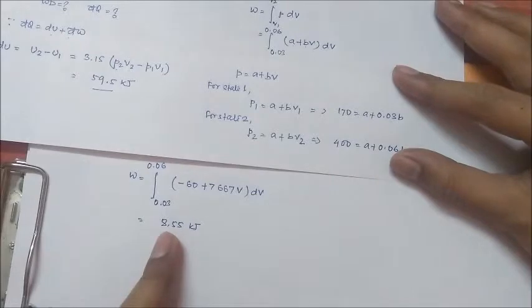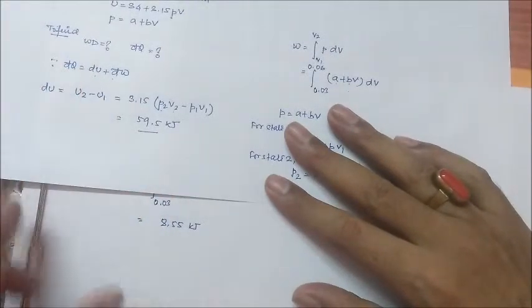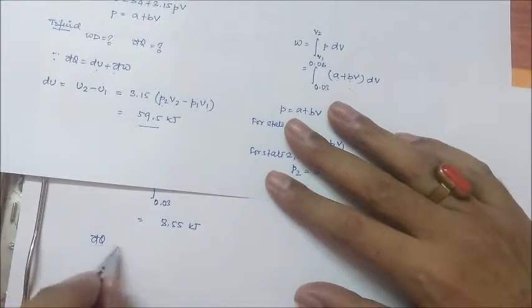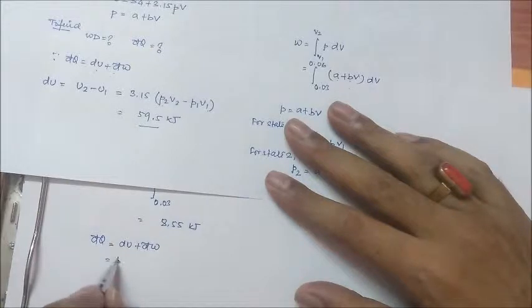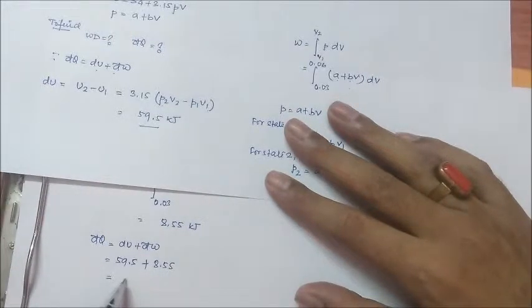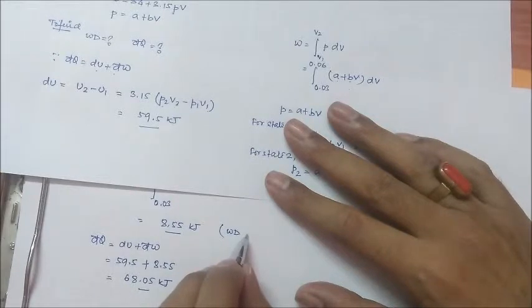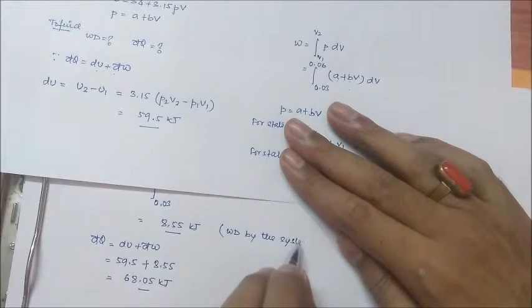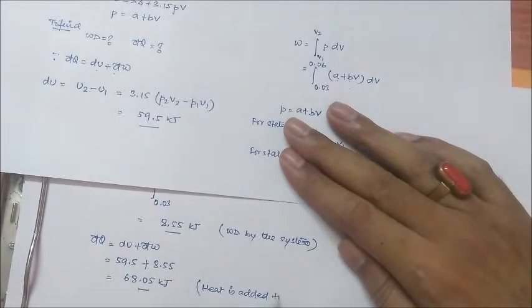Now see we got work done, we have internal energy. Now we can use the first law of thermodynamics for heat transfer. So dQ is equal to du plus dW. du we know as 59.5 we have calculated and dW we got 8.55, which means it comes around 68.05 kilojoule. Now these are the magnitudes. Now what is the direction? Its direction is work done by the system. Work is done by the system. What this implies is the heat is added to the system.